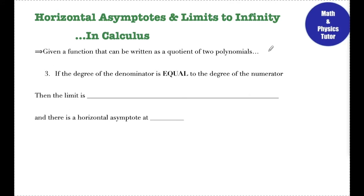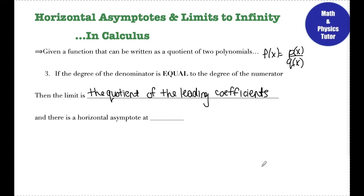The third case: given f(x) = p(x)/q(x), if the degree of the numerator is equal to the degree of the denominator, then the limit as x approaches infinity is the quotient of the leading coefficients. If that quotient is a/b, then there is a horizontal asymptote at y = a/b.